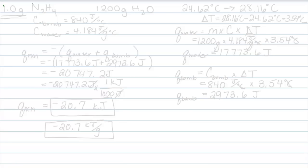For this problem, we're trying to figure out how much energy we get out of the combustion of one gram of hydrazine, known to us commonly as rocket fuel. We put it in a bomb calorimeter which contains 1200 grams of water. We are told in the problem that the temperature rose from 24.62 degrees Celsius to 28.16 degrees Celsius.